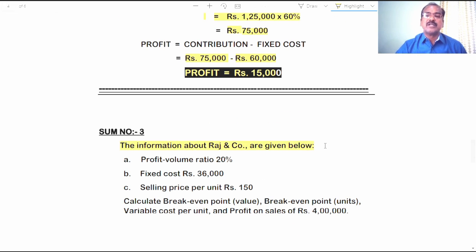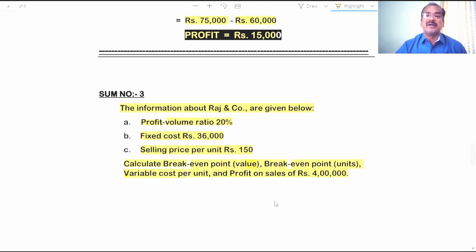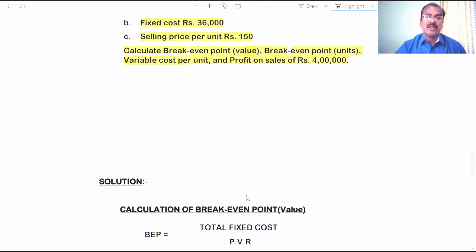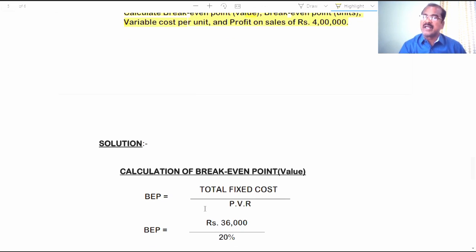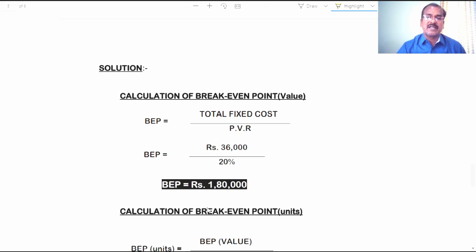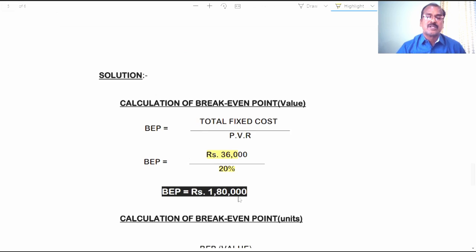The third problem: information about Raj & Co is given below — Profit Volume Ratio 20 percent, Fixed Cost 36,000 rupees, Selling Price per unit 150 rupees. You are asked to calculate: Break-Even Point in value, Break-Even Point in units, variable cost per unit, and profit on sale of 4 lakh rupees. BEP in value equals Fixed Cost divided by PVR: 36,000 divided by 20 percent equals 1 lakh 80,000 rupees.